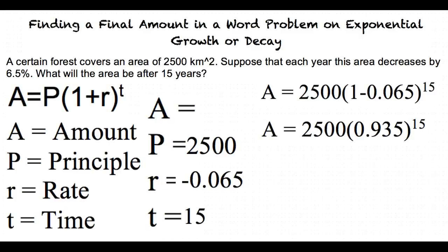The answer you receive rounded to the nearest square kilometer will be A is equal to 912 km².